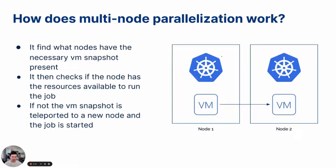How does it work? When a new job is scheduled, it first checks what nodes have an available VM snapshot to load. It will then check if that node has the given resources to run that job.